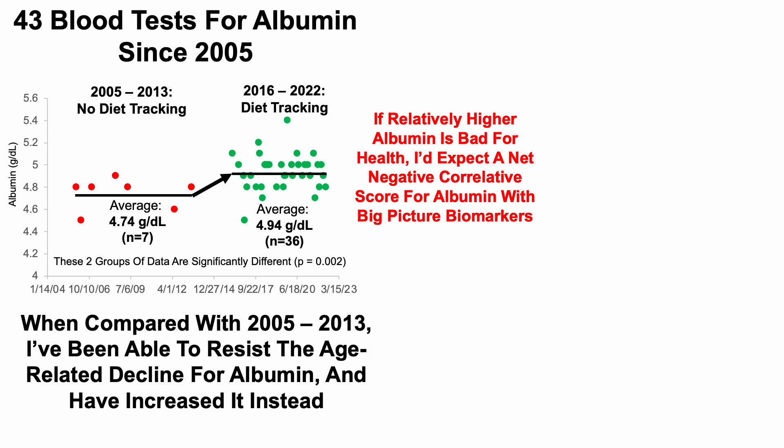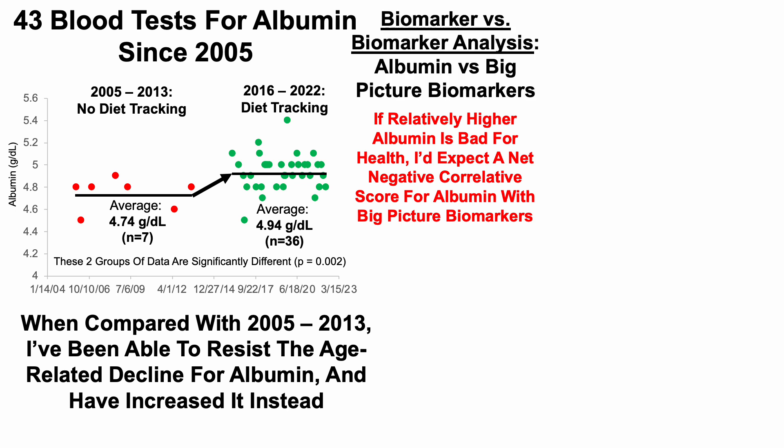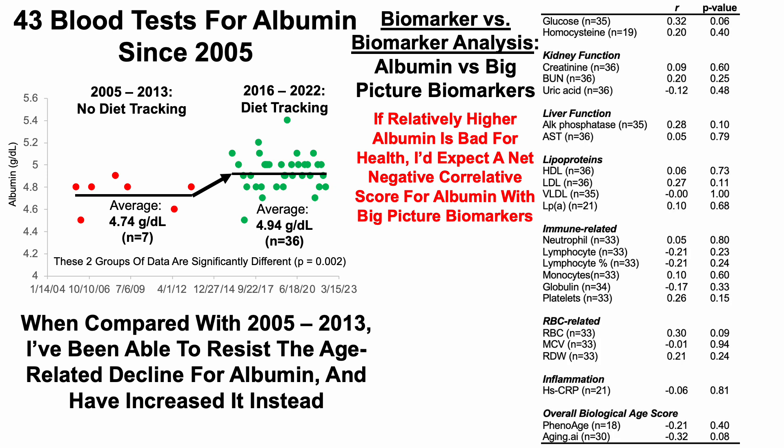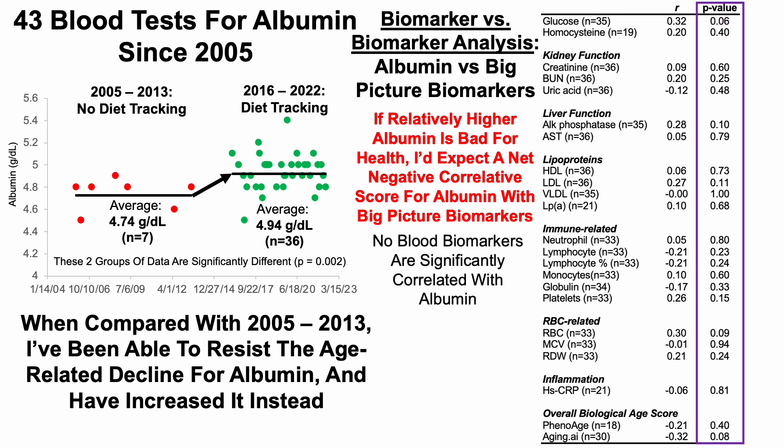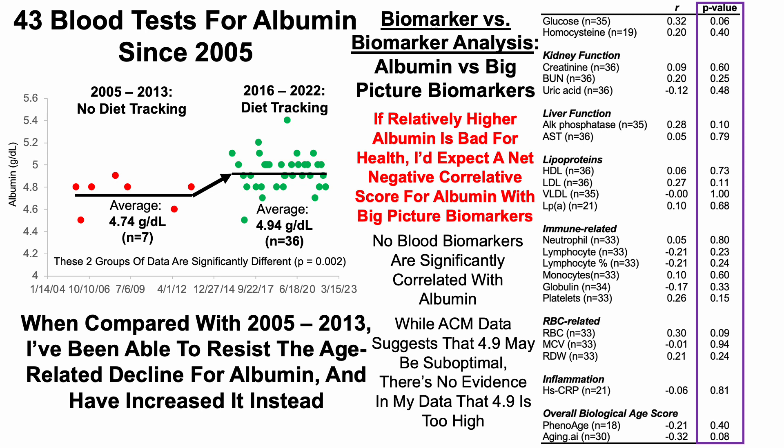This would put my current average albumin at 4.94 at a 7% increased all-cause mortality risk. So if relatively higher albumin is bad for health, I'd expect a net negative correlative score for albumin with big-picture biomarkers. Looking at 23 biomarkers representative of many different organ systems, no blood biomarkers are significantly correlated with albumin. The only one that's even close is glucose with a p-value of 0.06 and a positive correlation — relatively higher albumin is close to being significantly correlated with higher glucose, but just outside statistical significance. So while the all-cause mortality data suggests 4.9 may be suboptimal, there's no evidence in my data that 4.9 is too high.